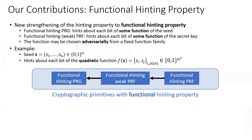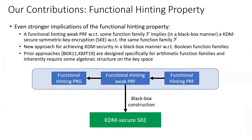We also introduce in the paper a new strengthening of the hinting property to a functional hinting property, where the adversary can also learn hints about some function of the secret seed or the secret key. We show certain interesting implications of the functional hinting property. For example, we show that a functional hinting weak PRF with respect to some function family implies, in a black box manner, a KDM-secure symmetric key encryption scheme with respect to the same function family. This yields a new approach for achieving black box constructions of KDM-secure encryption with respect to Boolean function families.